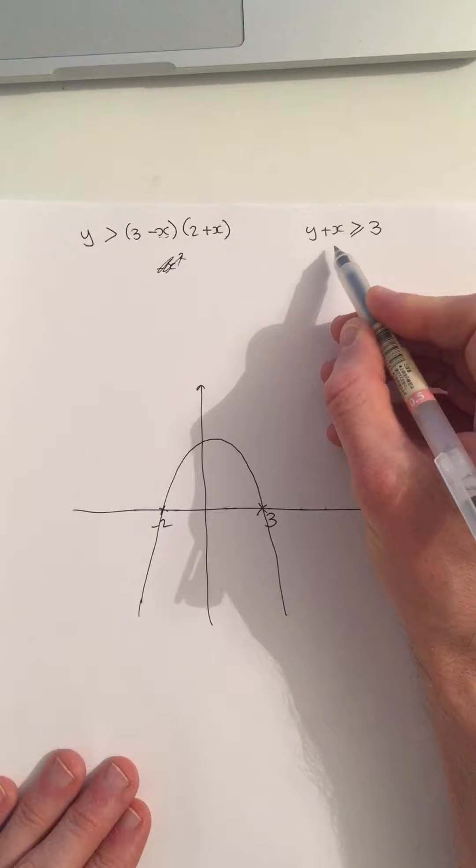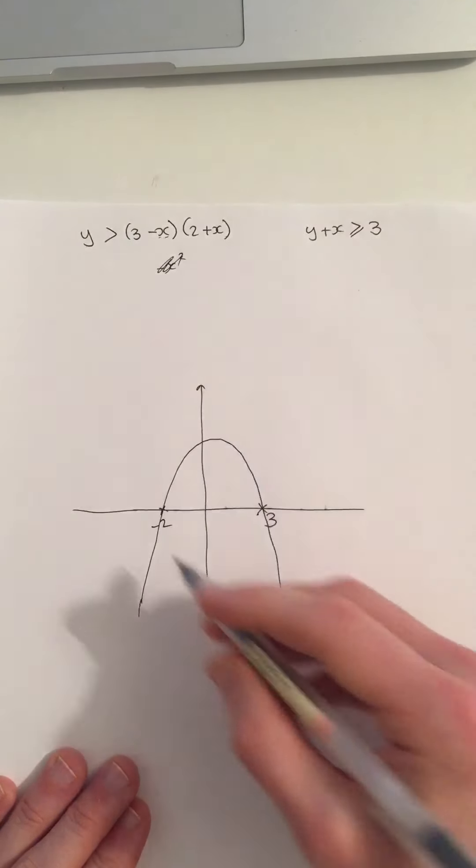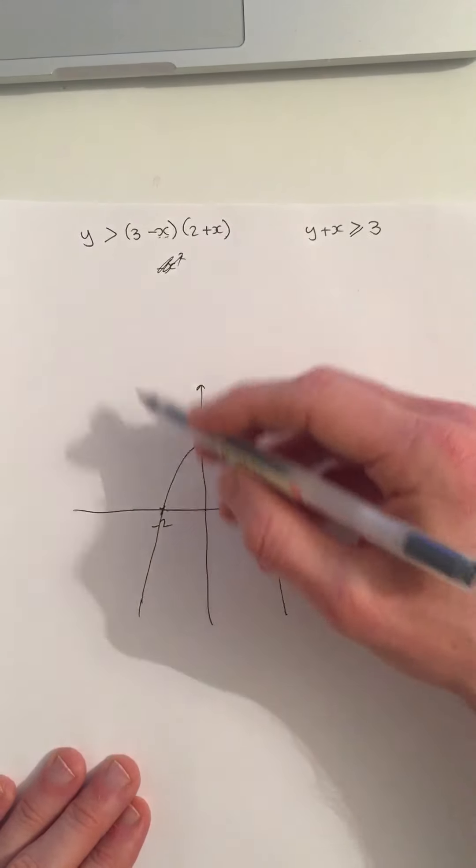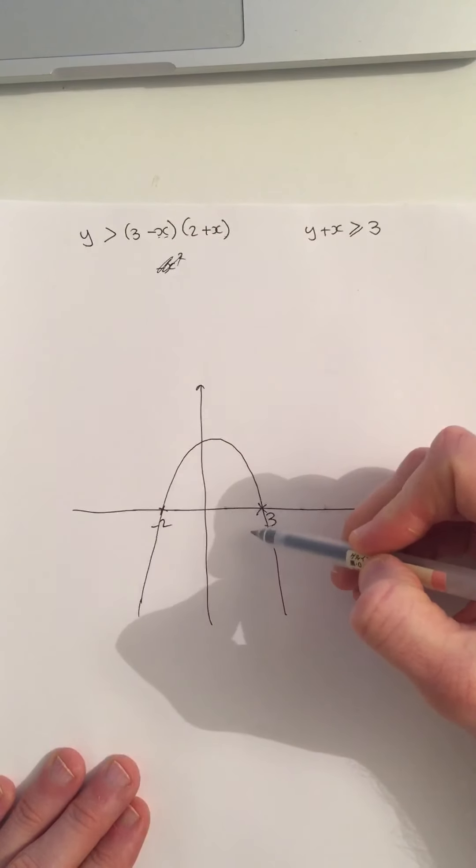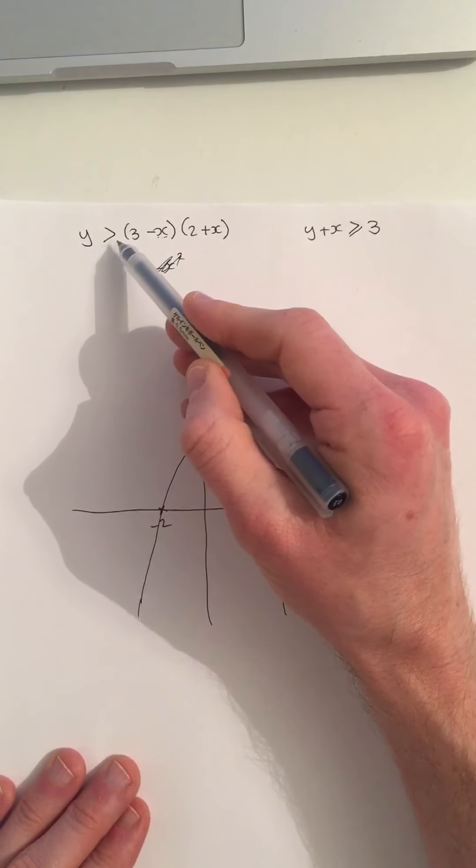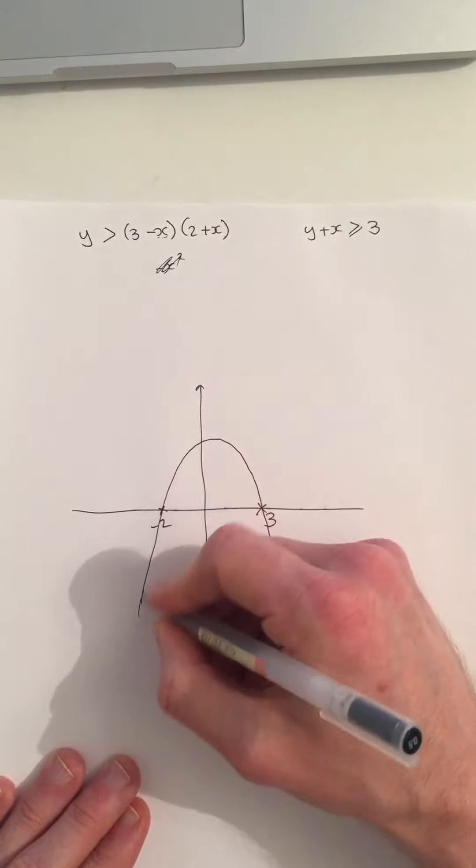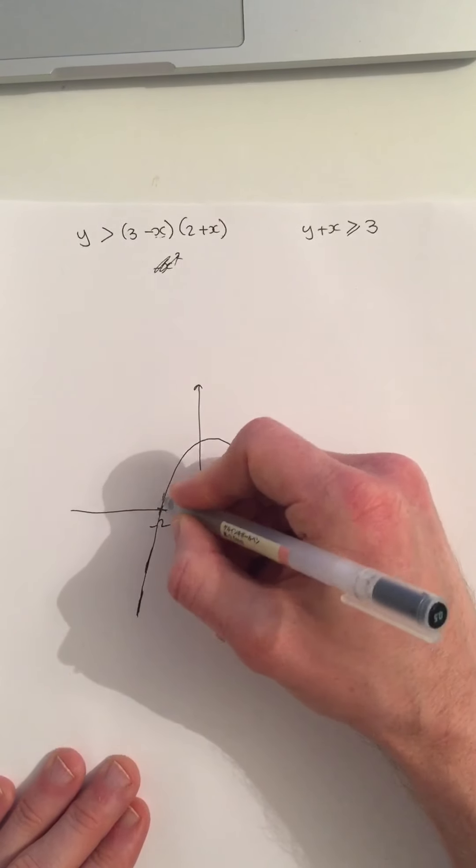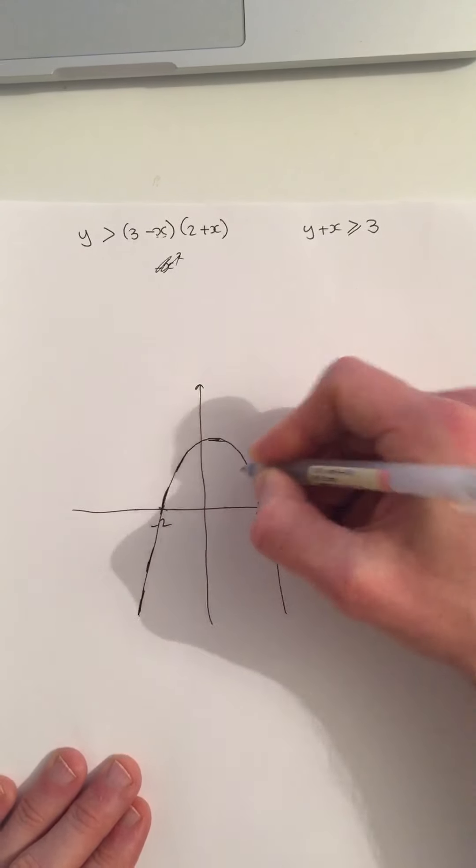I also want, or the other thing I should probably have done here, but I've done it in black pen so I can't, this should be a dotted line rather than a solid line because y should be greater than but not equal to. So really, this should be a dotted line and not a solid line.